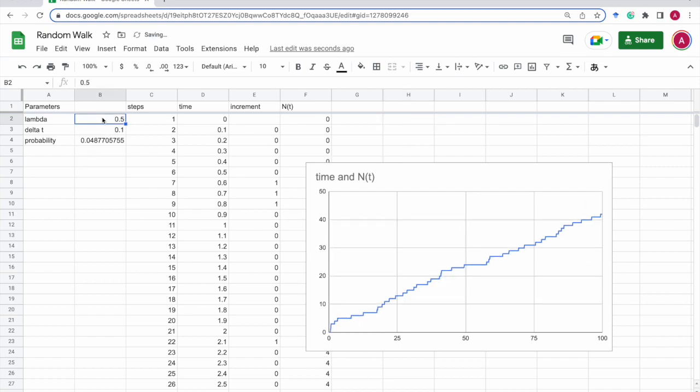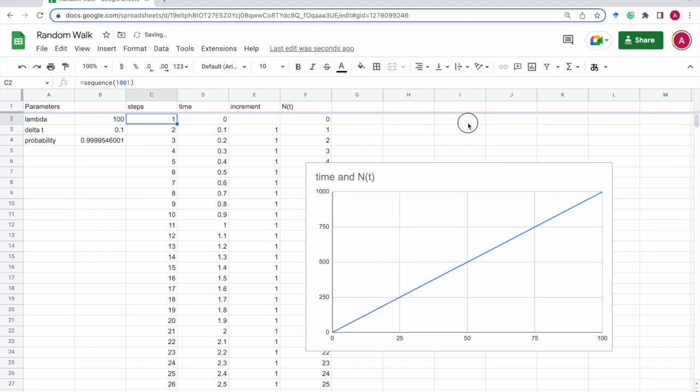So if this is really big, let's make it 100. It's like a straight line because the probability of increment is close to 1. As you can see here, it's 0.999954 and so on. So at every time step, it increases by 1 almost surely. I mean, it's not quite almost surely, but it's very close to almost surely.